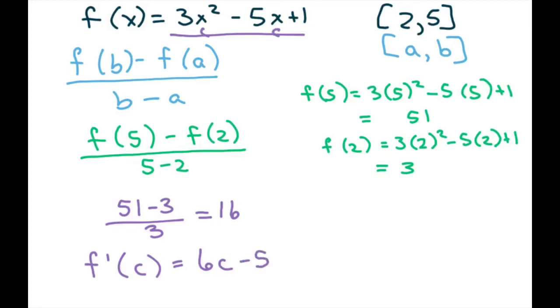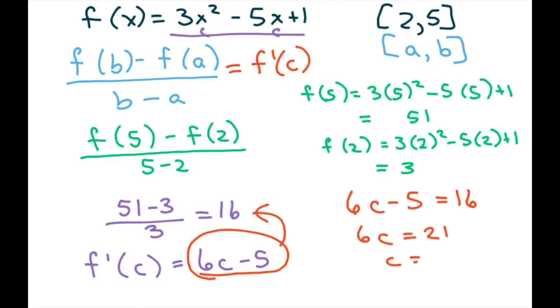Now they want us to find our c, so you simply set this equal based off our formula, because this equals f'(c). So we're going to do 6c - 5 equals 16. So 6c equals 21, c equals 21 divided by 6, which reduces to 7/2.